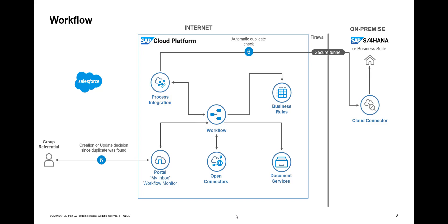In this demo, we'll actually find that such an account already exists in the S/4HANA system. A notification is sent to the group referential, who decides whether to create a new account or simply update the existing one. In some cases we still want a human person making this decision, and the group referential is notified of the automatic duplicate check result but can still choose to create a new account if needed.